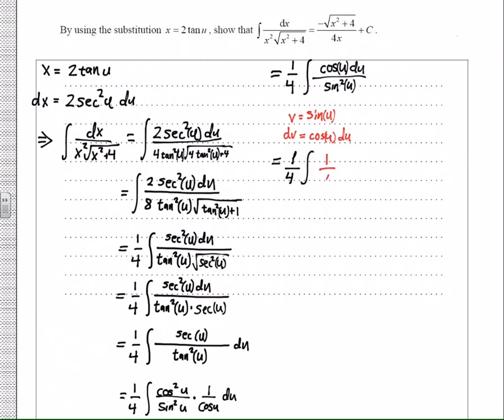So now we have the cosine of u over the sine squared of u. I'm going to let v be the sine of u, and dv is equal to cosine of u du, which gives me an easy-to-integrate function. And I put the sine of u back, and then I put the x back.